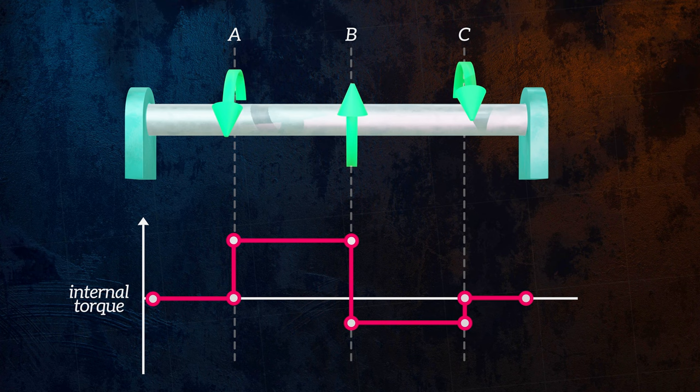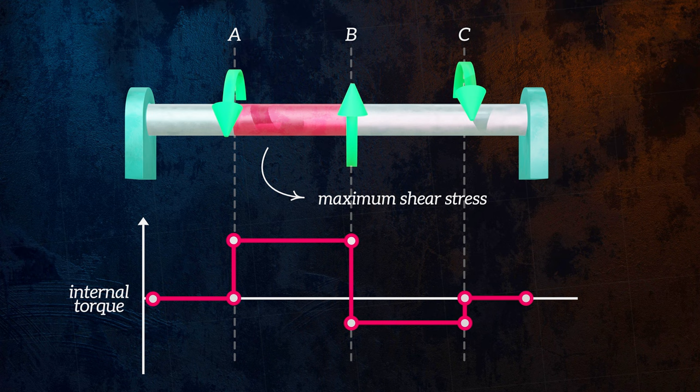The maximum shear stress will occur in the section of the shaft with the largest internal torque, and can easily be calculated using the equation we derived earlier.